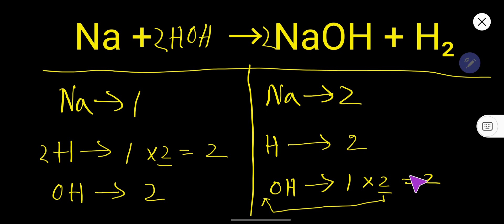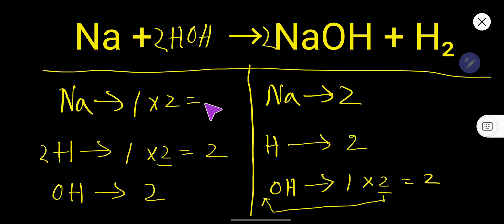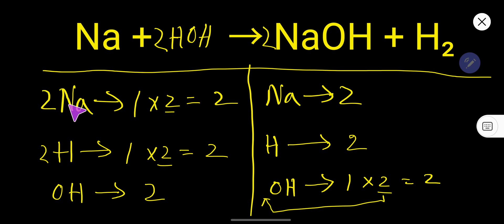Now balance sodium: here 1, here 2. So to balance sodium, multiply here by 2, that gives us 2. So this is the balanced equation. Thank you for viewing this video.